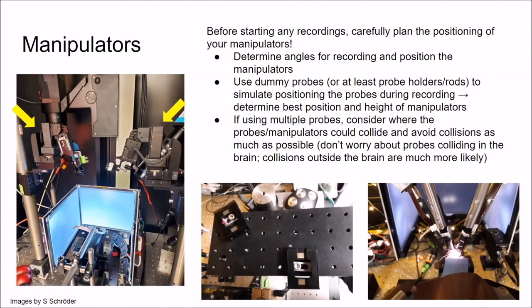If you have multiple probes, really consider where they could collide and then plan it so to avoid collisions. What happens if the probes collide in the brain? I think you really don't need to worry about collisions in the brain. It's much more likely that collisions happen outside the brain where the big hardware is. Here you see an example of a breadboard where we position two manipulators to have two probes in the same hemisphere recording from the superior colliculus. And here you can see four probes positioned in the head, all in the superior colliculus. You can see it's really tight, so you need to try out with your manipulators how to position them. And also you see that each probe is angled in a certain way so that if you go down, they don't hit each other outside of the brain.